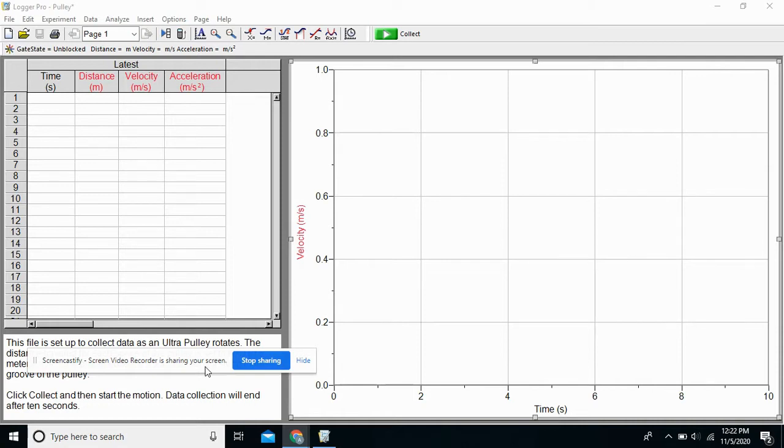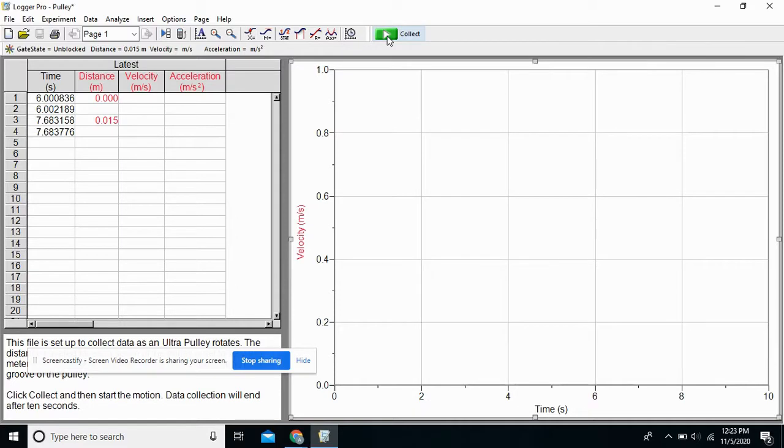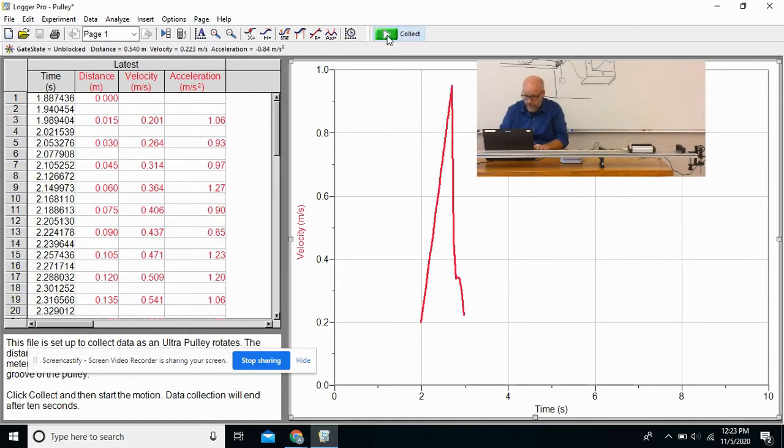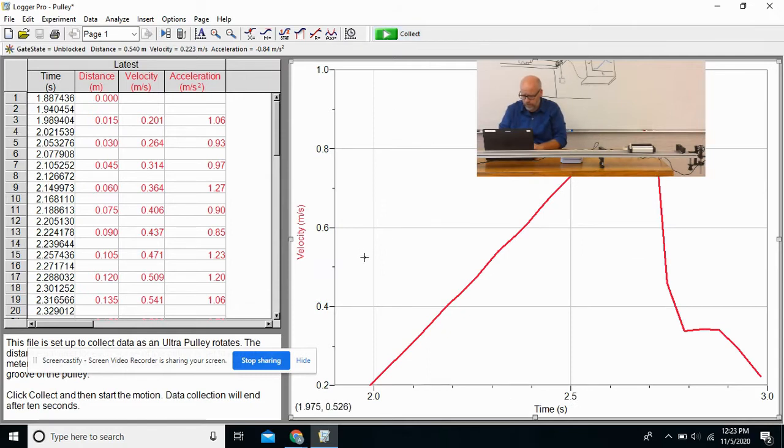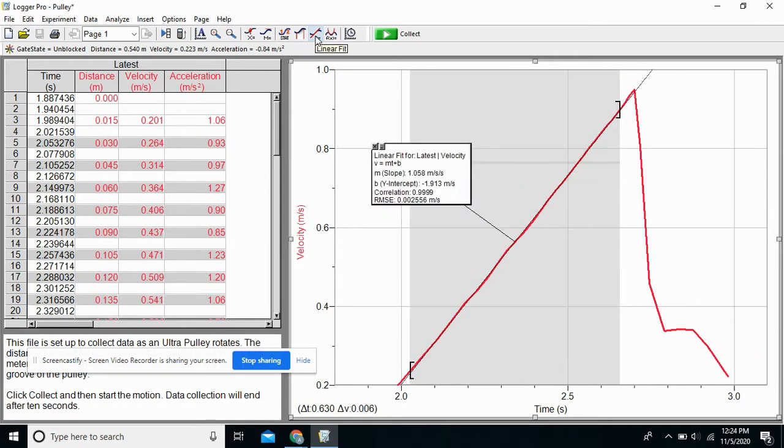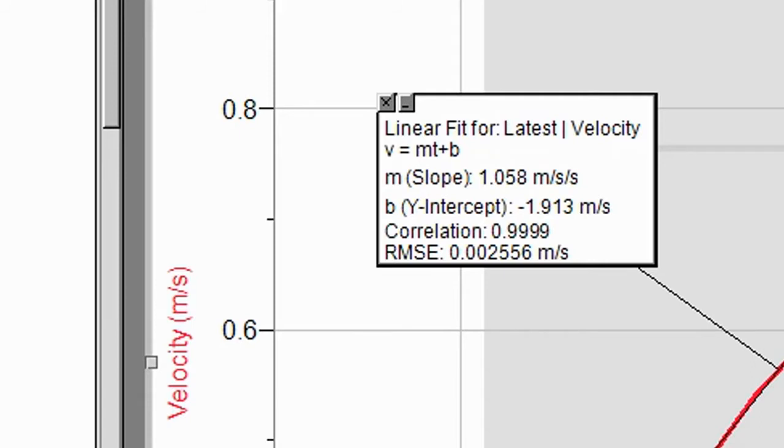So here we go. System one, trial one. This is going to be good. Ready? I'm going to hit collect. System one, trial one. Oh, the cart clearly accelerated. I'm going to hit control J. Look at that beautiful linear line. I'm going to highlight that line, go to my regression statistics and have 1.058 meters per second squared. Good.